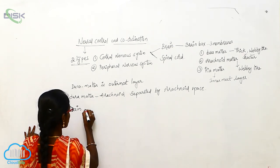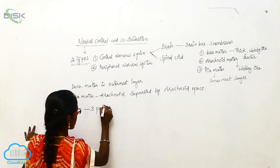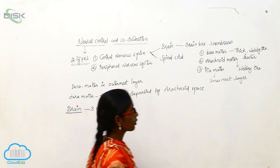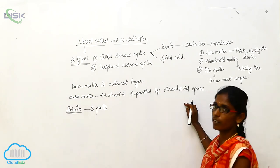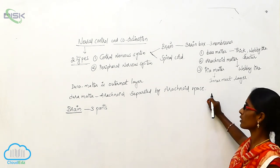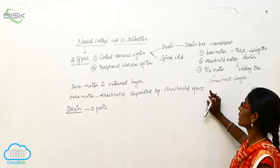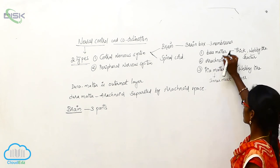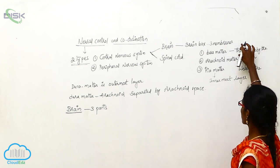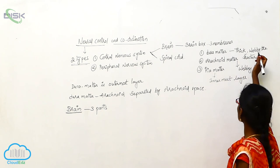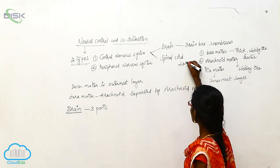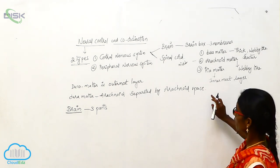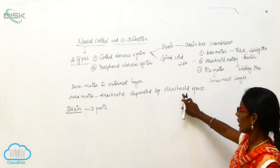The Brain is divided into three parts. To summarize: the Neural System divides into two types — Central Nervous System and Peripheral Nervous System. The CNS has Brain and Spinal Cord. The Brain is covered by three membranes: Dura Mater (outermost, thick), Arachnoid Mater (middle layer), and Pia Mater (innermost layer). Dura Mater and Arachnoid Mater are separated by the subdural space.